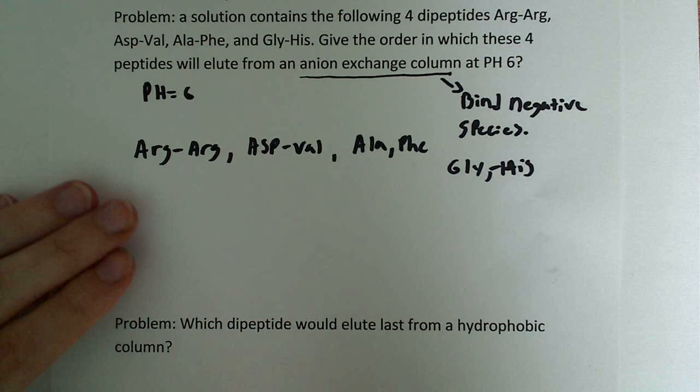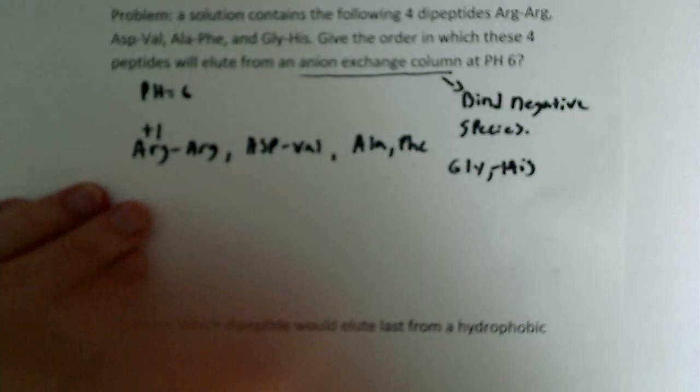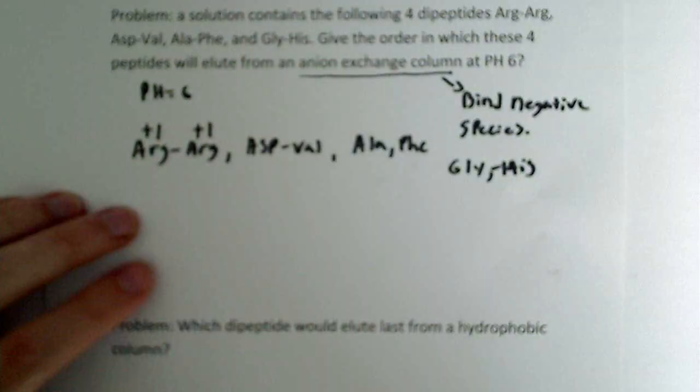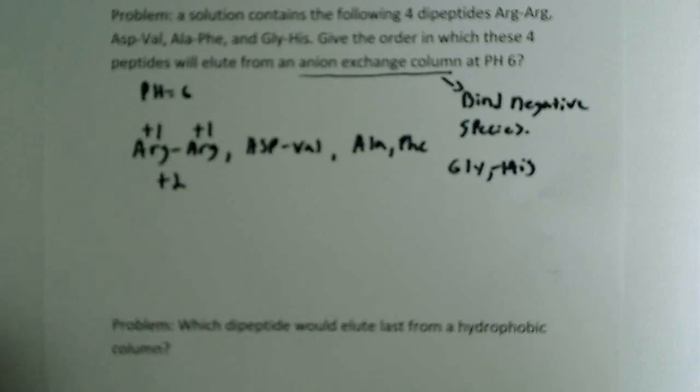In the case of arginine here at pH 6, we know that it doesn't lose a proton until about pH of 12. So this can have a plus 1 and a plus 1. Overall, this dipeptide is going to have a plus 2 charge.